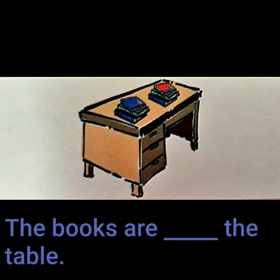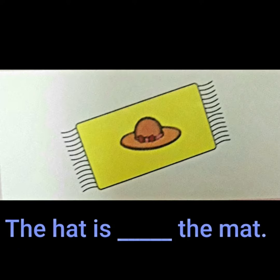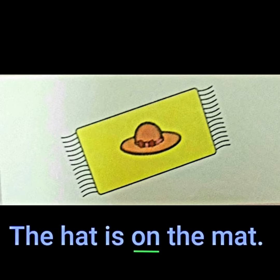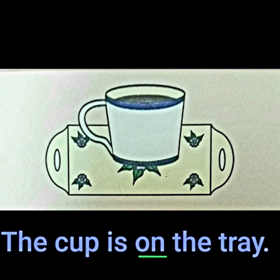The books are — the table. The books are on the table. The hat is — the mat. The hat is on the mat. The cup is — the tray. The cup is on the tray.